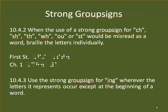When the use of a strong group sign for CH, SH, TH, WH, OU, or ST would be misread as a word, braille the letters individually. Notice those are all the contractions that can be either word signs or group signs, so if they could be mistaken for a word sign when we want them to mean a group sign, we have to spell them out. For example, 'street' — we would not use the ST contraction as in the old code, because standing alone it would be read as the whole word STILL. And 'chapter' — CH would be standing alone due to spaces on either side and would be read as CHILD, not CH. So we have to spell out CH.